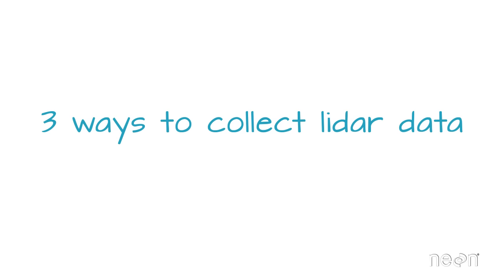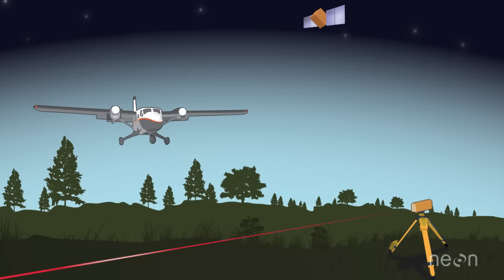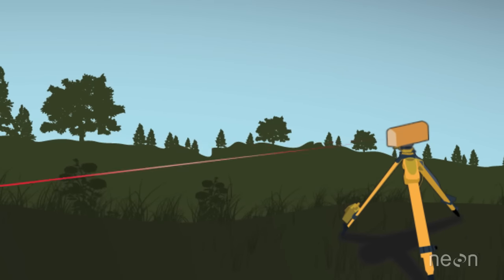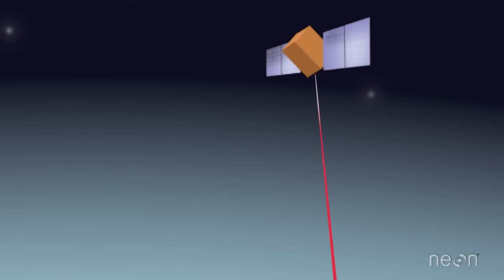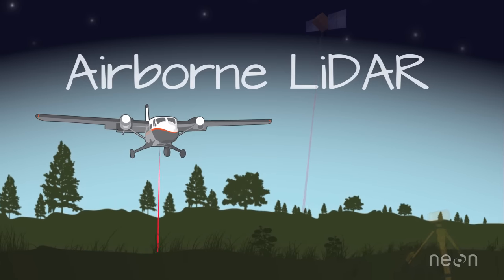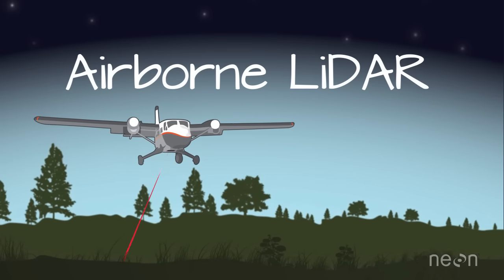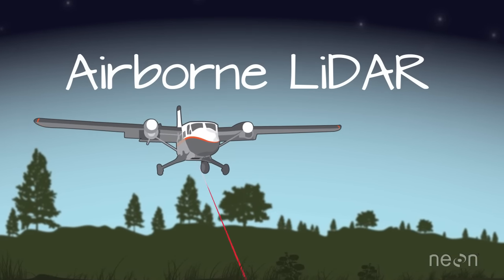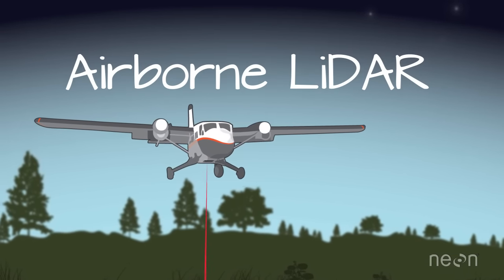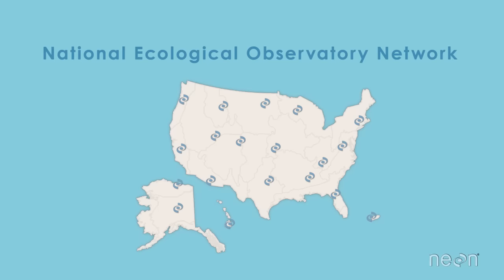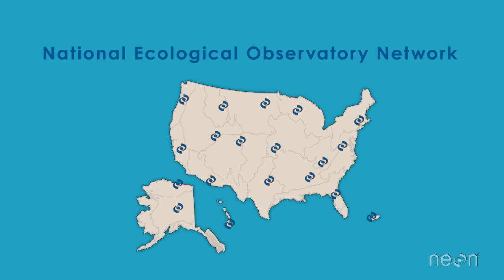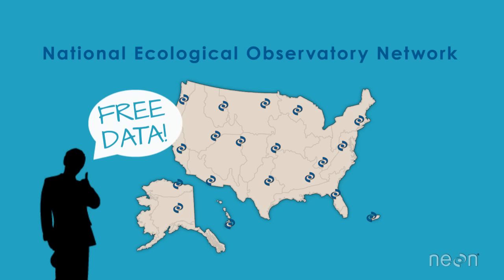There are different ways to collect LIDAR data — from the ground, from an airplane, or even from space. Airborne LIDAR data are the most commonly available, and airborne LIDAR data will also be freely available through the National Ecological Observatory Network, or NEON. So we'll focus on that in this video.